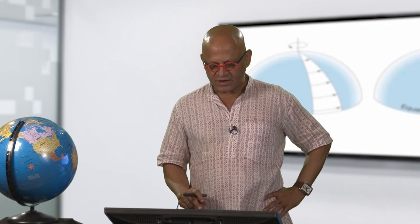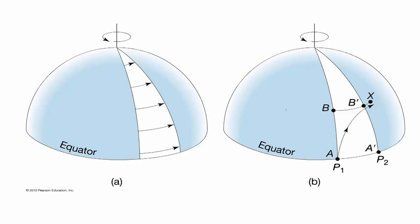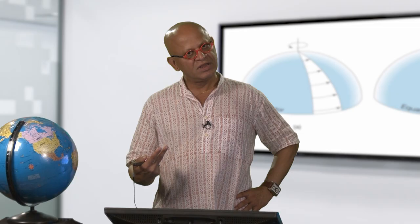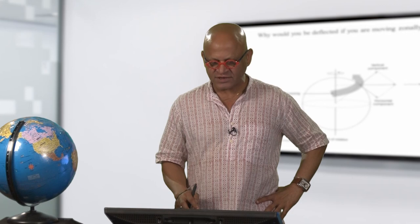How does it work if you are trying to move from east to west or west to east? Just to confirm: if we are moving north we will be tilted to the right in the northern hemisphere by the Coriolis force. By the same concept, in the southern hemisphere you will be moved to the left of the direction of motion — that is very important.